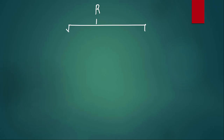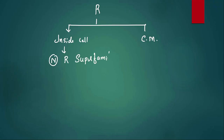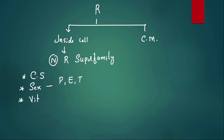Receptors can be membrane-based or intracellular. Inside the cell we have the nuclear receptor superfamily, which includes corticosteroids (mineralocorticoids and glucocorticoids), sex steroids (progesterone, estrogen, testosterone), vitamins A and D, the hormone thyroxine, and PPARs. These are the slowest acting receptors.